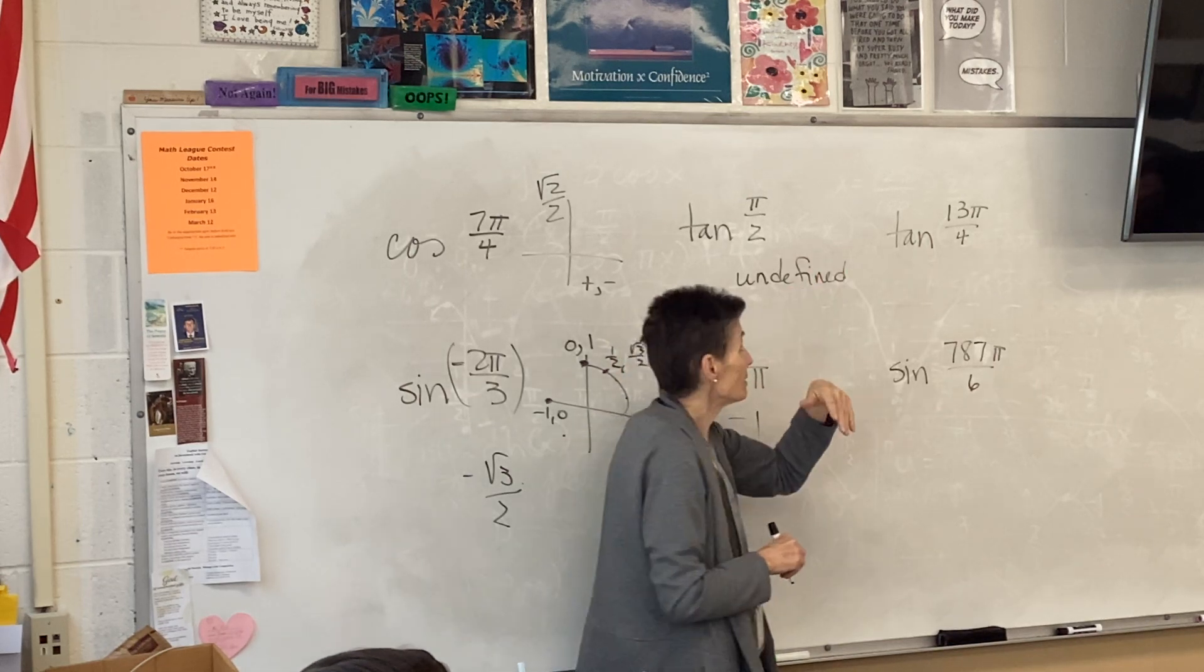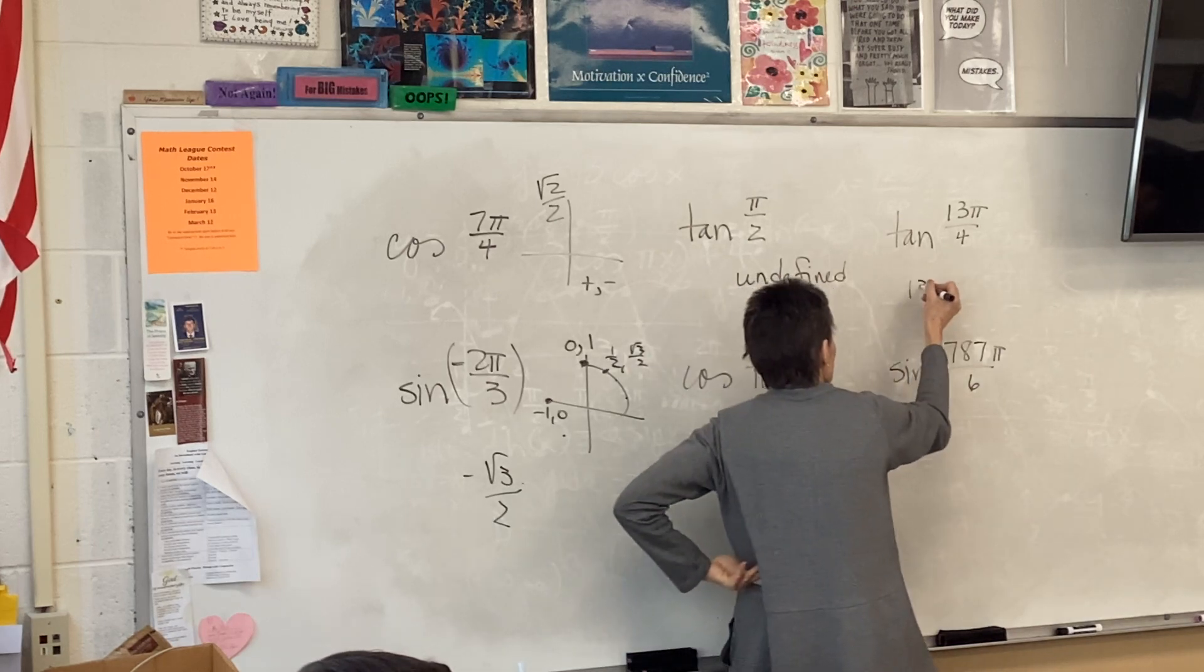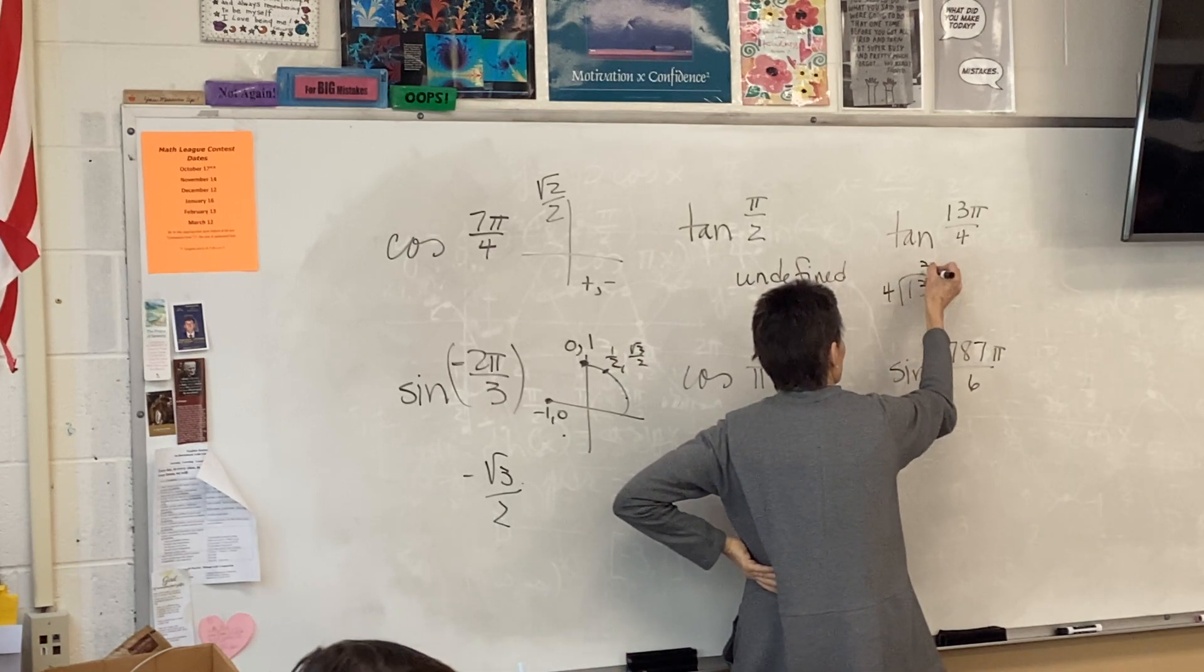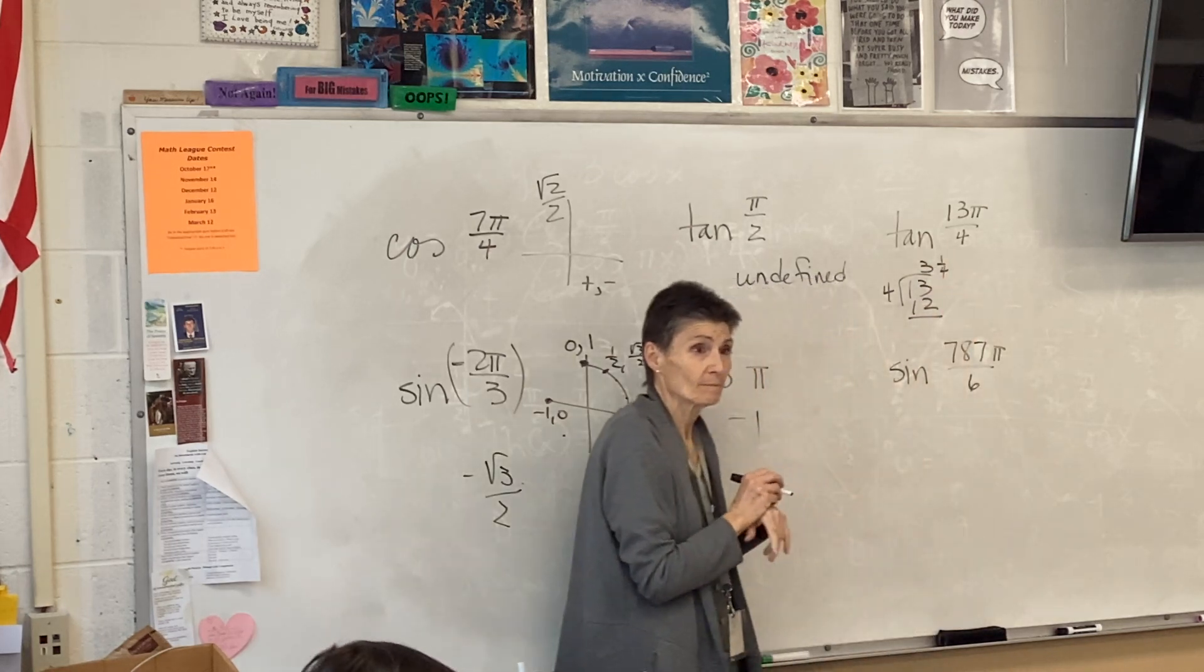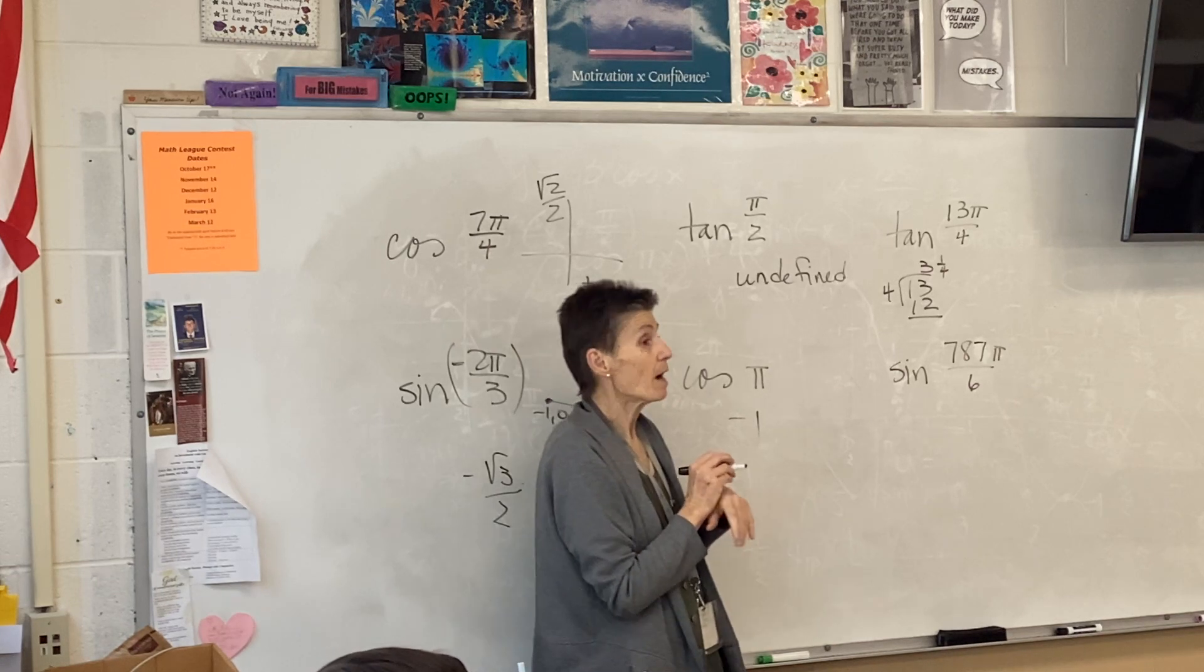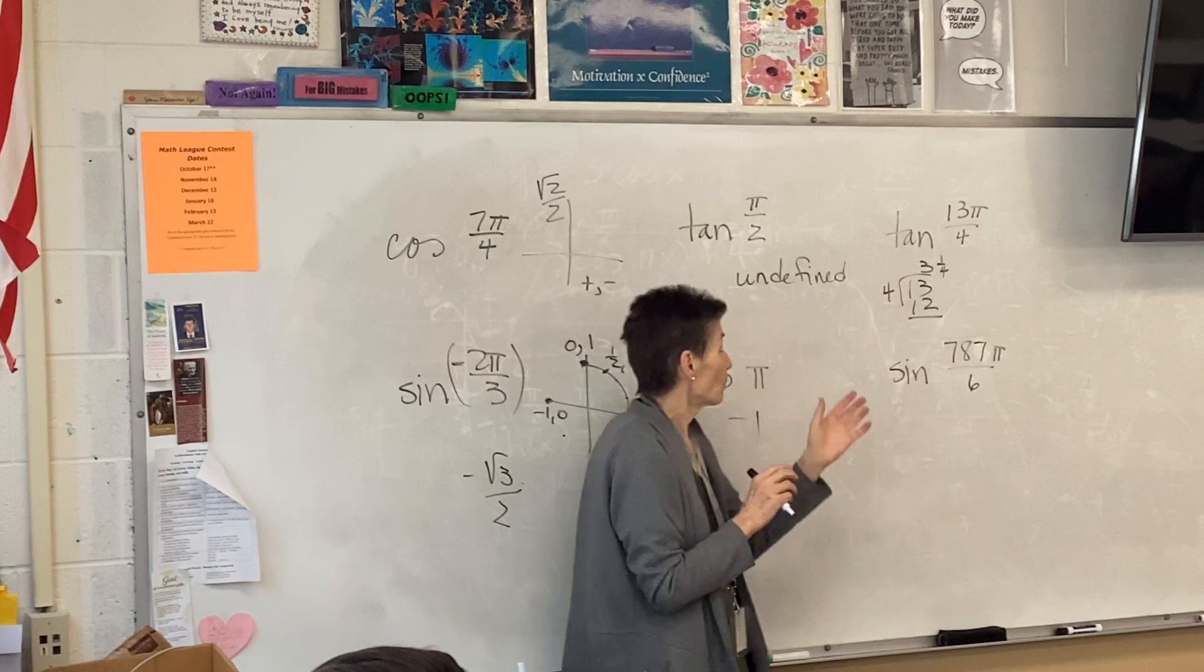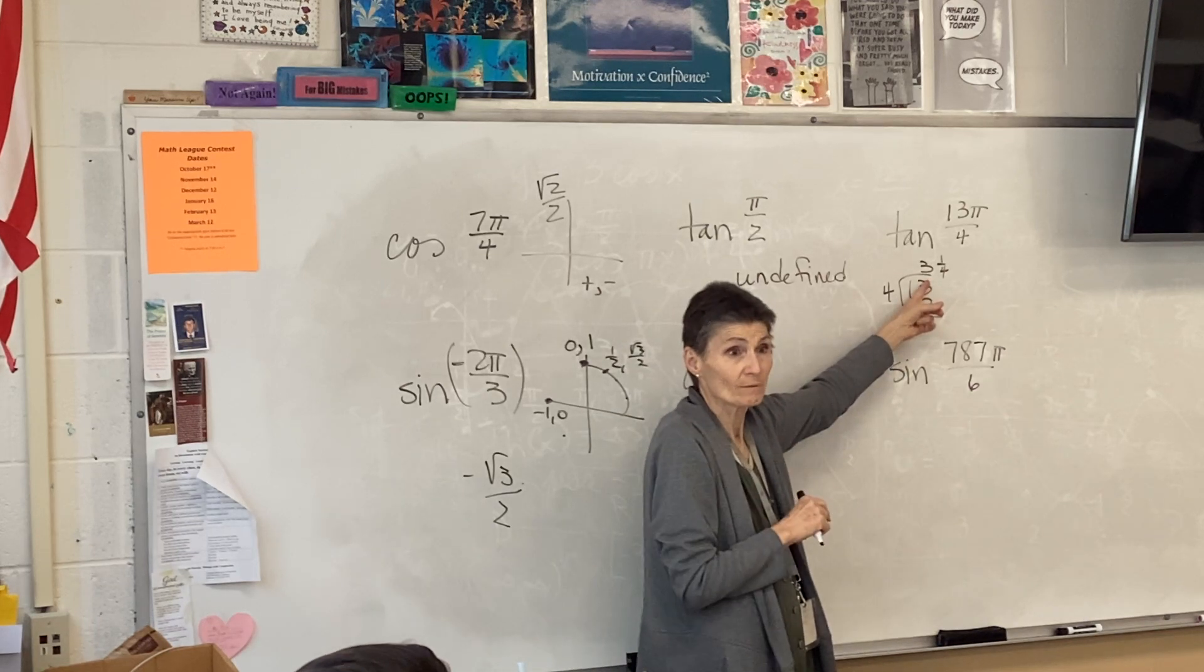Right? Okay. So let's get to figure out which quadrant that's in. So 13 fourths is 3 and a fourth. But because sines and cosines are periodic, we can get rid of 2 of these because 2π is a revolution.